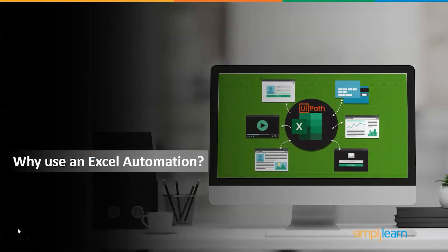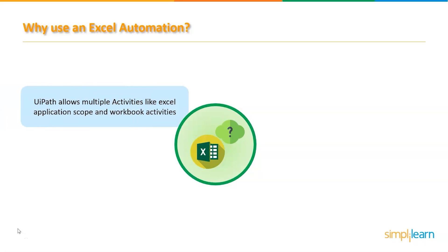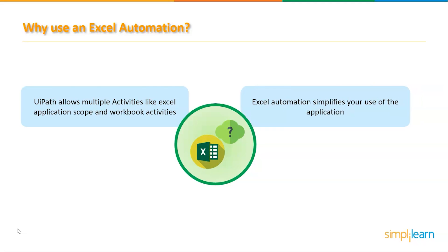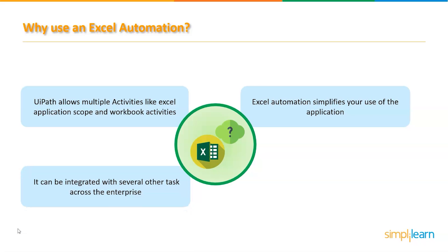Why use Excel automation? UiPath allows you to automate Excel in various ways such as Excel application scope activities and workbook activities. Excel automation simplifies your application by performing tasks such as formatting cells, updating values, and running macros automatically. Excel tasks in an automated process can also be integrated with several other functions across the enterprise using an RPA solution.